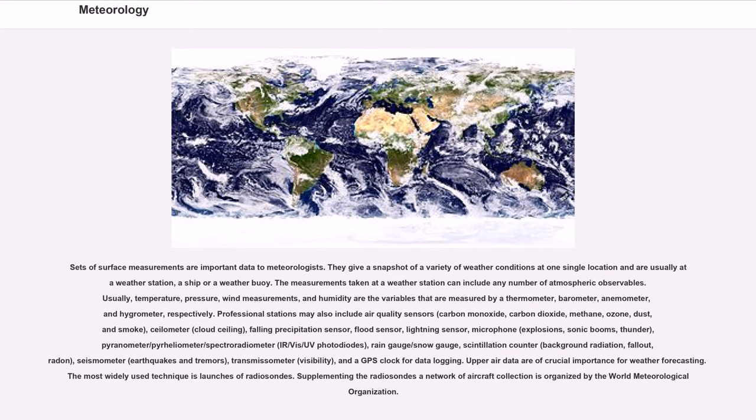Professional stations may also include air quality sensors for carbon monoxide, carbon dioxide, methane, ozone, dust, and smoke; ceilometer for cloud ceiling; falling precipitation sensor; flood sensor; lightning sensor; microphone for explosions, sonic booms, thunder; pyranometer, pyrheliometer, spectroradiometer; rain gauge, snow gauge; scintillation counter for background radiation, fallout, radon; seismometer for earthquakes and tremors; transmissometer for visibility; and a GPS clock for data logging. Upper air data are of crucial importance for weather forecasting. The most widely used technique is launches of radiosondes.